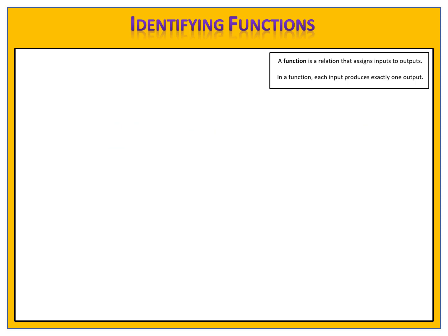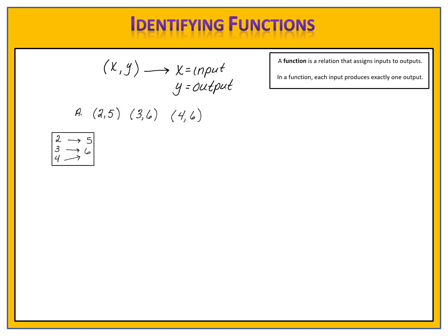Let's extend this idea to see how we can apply it to lists of ordered pairs. Remember, an ordered pair has the form x comma y, where x is the input and y is the output. Here's a list of ordered pairs. Does this list represent a function? If we were to create a mapping diagram, we have the inputs 2, 3, and 4. 2 outputs a 5, 3 outputs a 6, and 4 outputs a 6. Each input produces exactly one output, so this is a function.